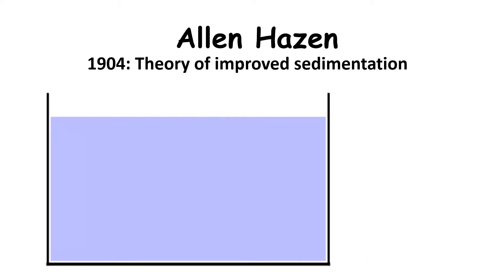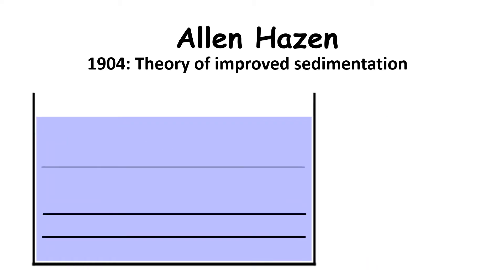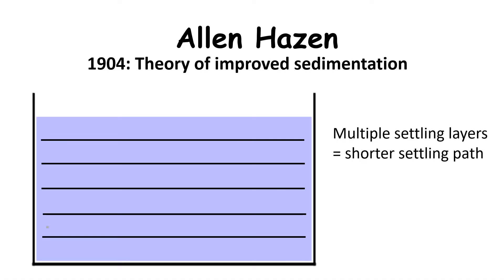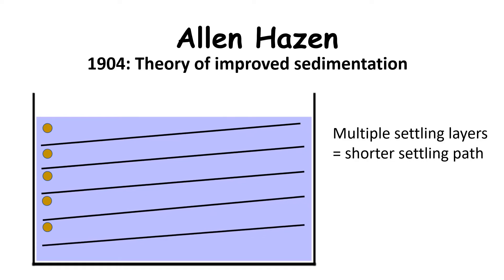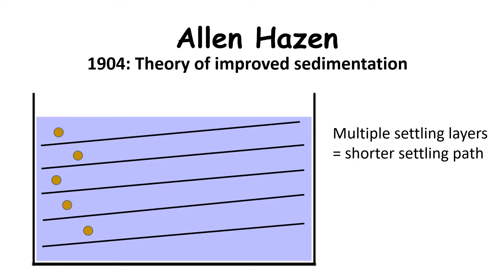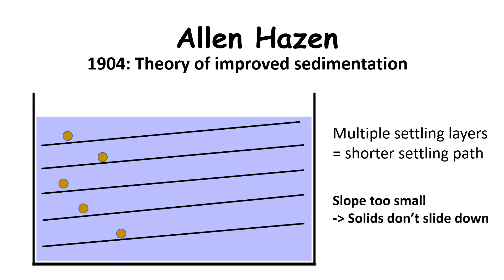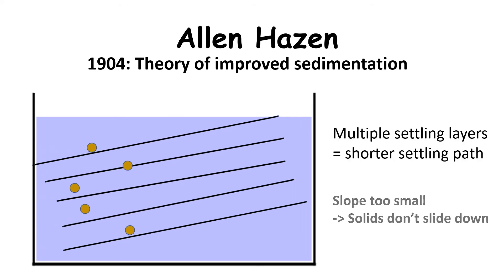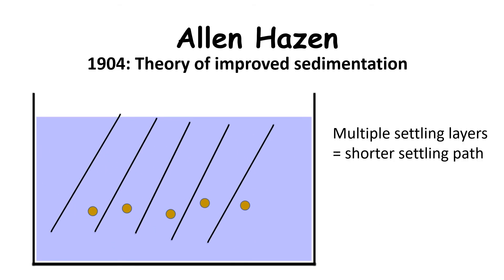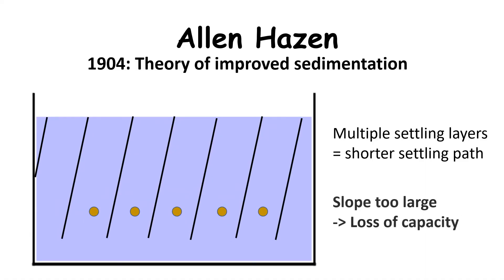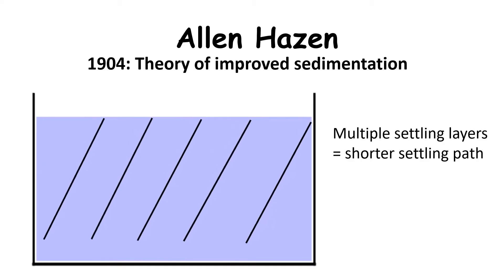To decrease the settling path of solids, multiple surface layers need to be added to the clarifier basin. To prevent solid build-up and clogging, the surface layers need to be inclined so that settled solids can slide down to the bottom of the basin and be carried out. If the layer slope is too small, solids won't slide down. However, if the layer slope is too large, the solid settling path is increased and less solids will settle out.